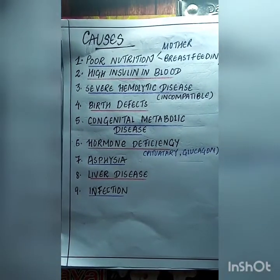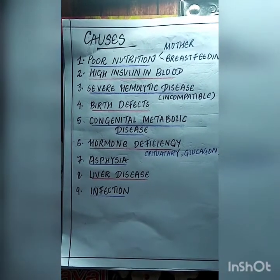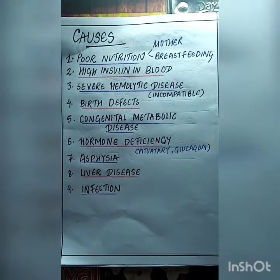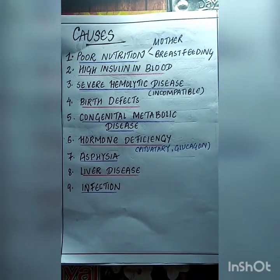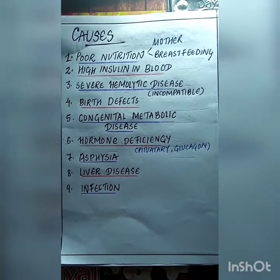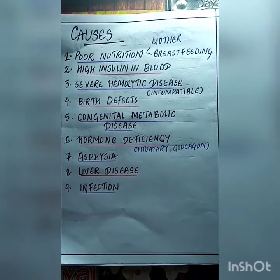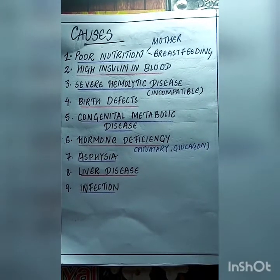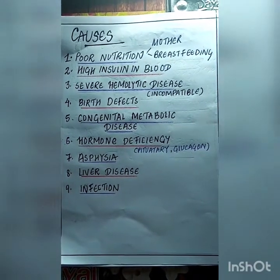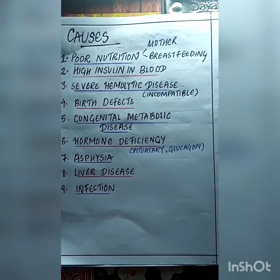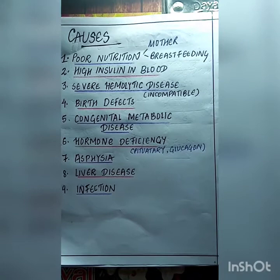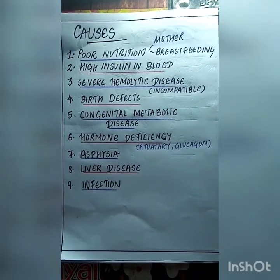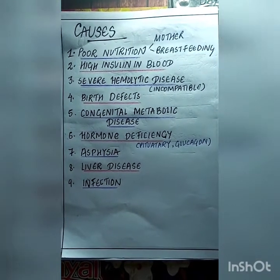Causes of hypoglycemia: First, poor nutrition — poor nutrition in the mother and also after birth if the child is not properly breastfed. Because of delayed breastfeeding, there are chances of poor nutrition that may lead to hypoglycemia.